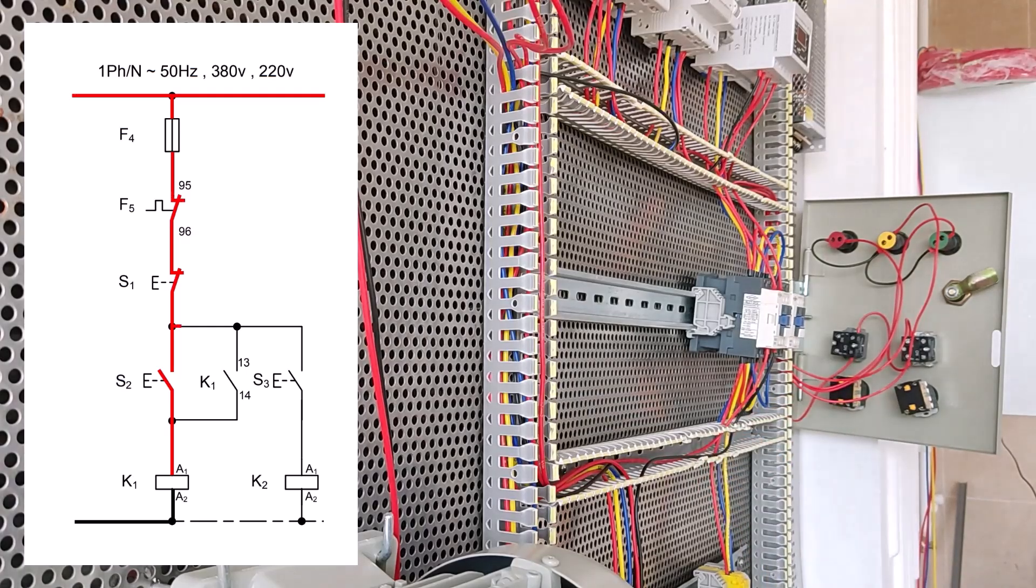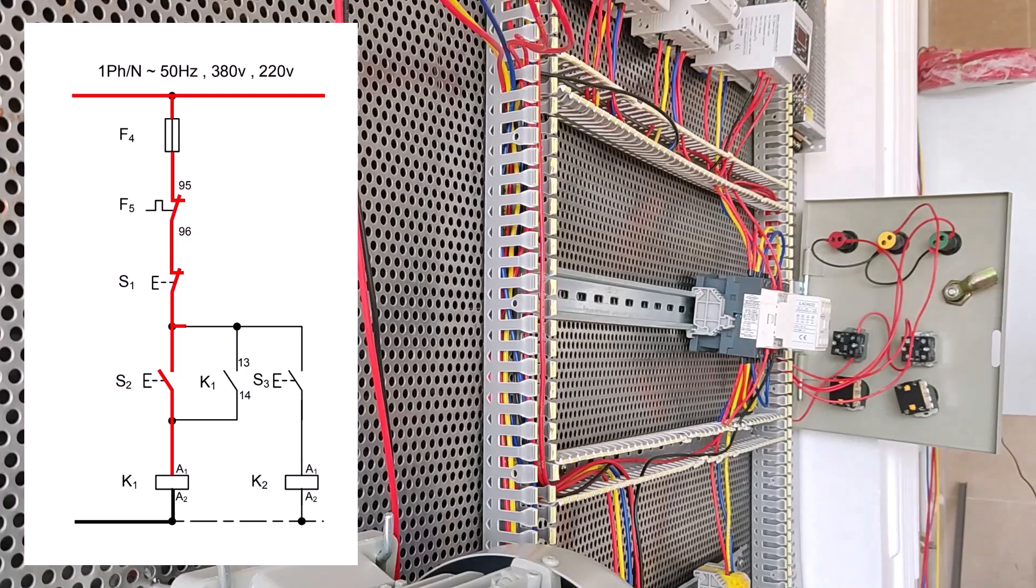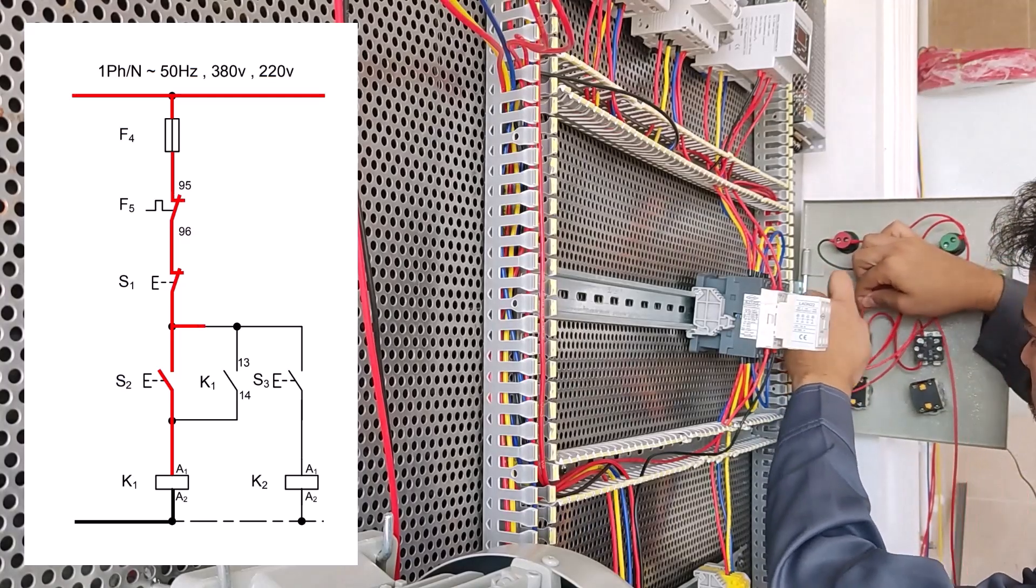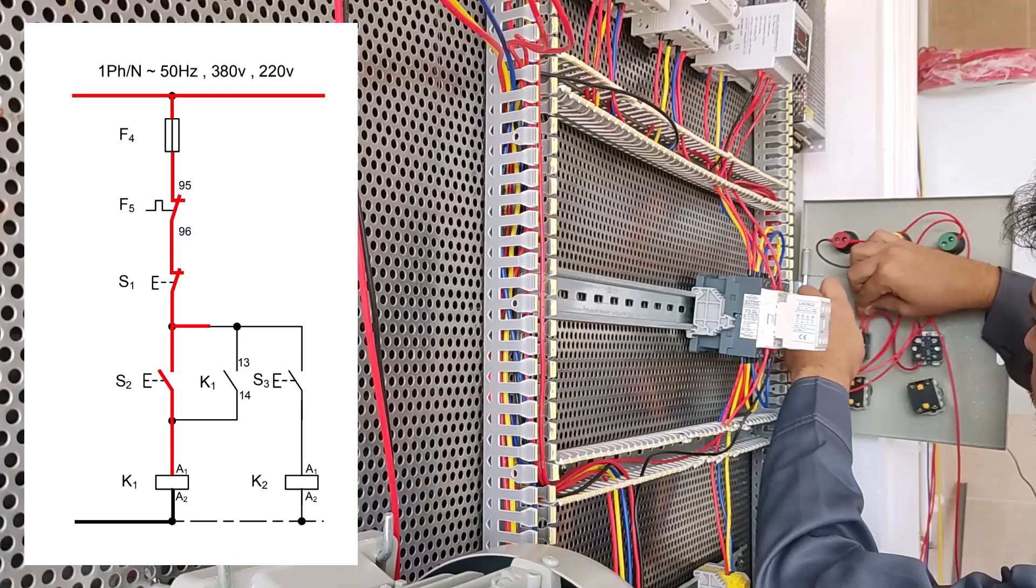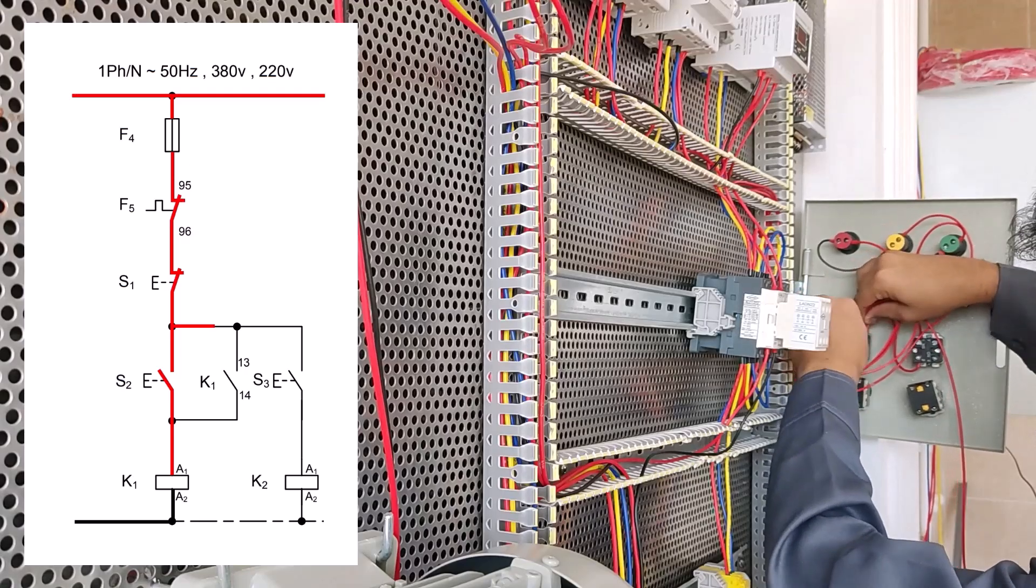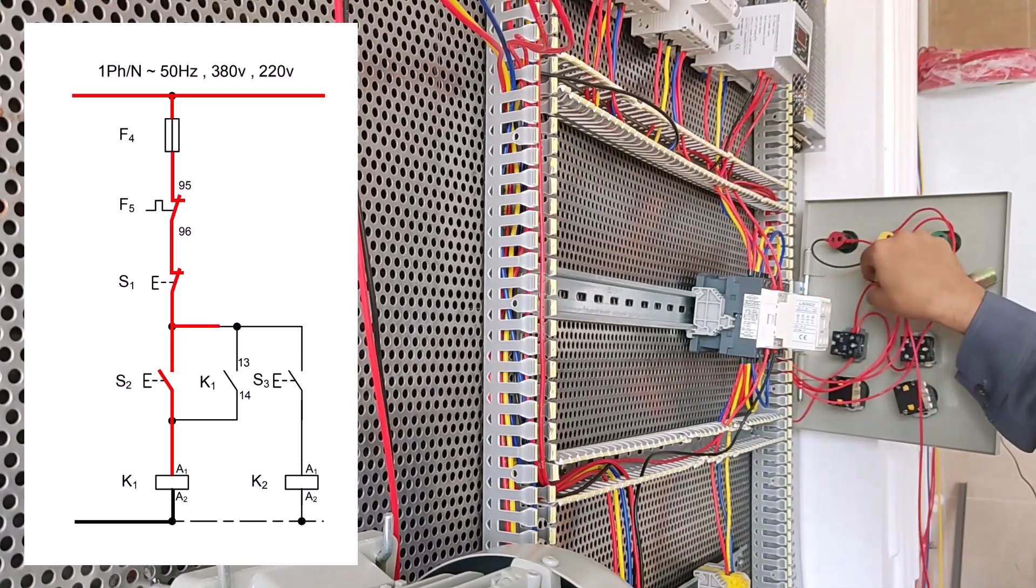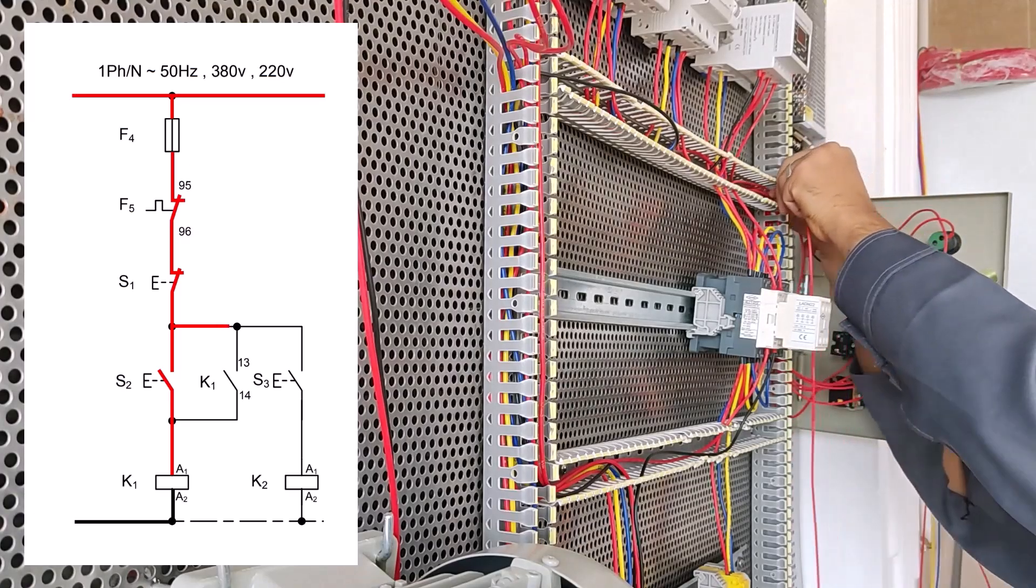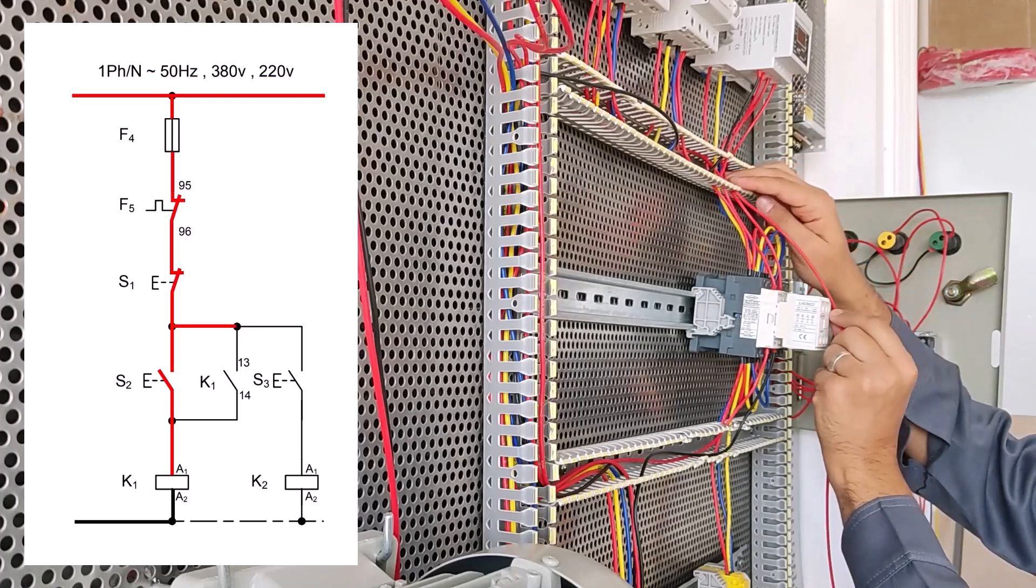Now we have to close 13 and 14 conductors K1 in parallel with 13 and 14 start S2. And now we have to connect 13 start S2 to 13 conductors K1.